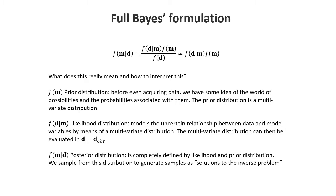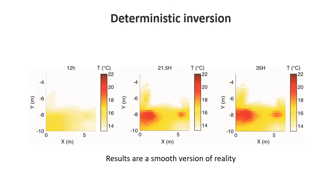What will be very important is to look at geological information. Even before we acquire data, we know something about the subsurface—for example, if we're dealing with certain depositional systems. The idea here is also to create samples from the posterior distributions rather than calculate a maximum of the posterior distribution, which was done in deterministic inversion. Deterministic inversion was a specific case of the Bayesian formula where we assigned Gaussian distributions, did linear or non-linear optimization, and obtained a single solution—a smoother version of reality.